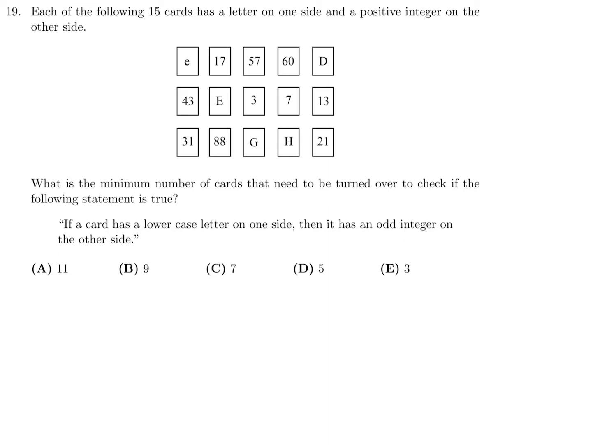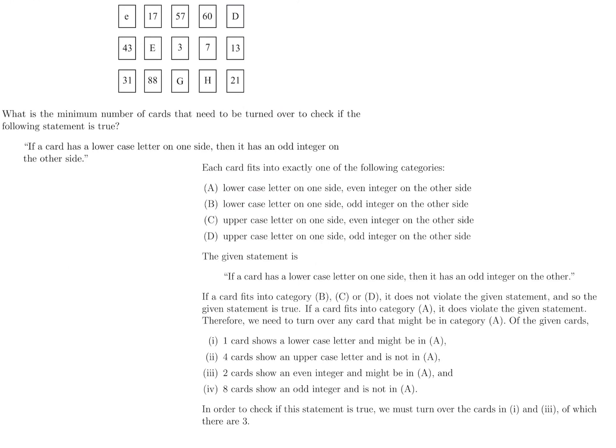Each of the following 15 cards has a letter on one side and a positive integer on the other side. What is the minimum number of cards that need to be turned over to check if the following statement is true? If a card has a lowercase letter on one side, then it has an odd integer on the other side. This question is a little tricky. We have a whole bunch of cards here, and every card is in one of four categories. It can be either lowercase or uppercase, and if it is lowercase, it can have on the other side either an even or odd. If it's uppercase, it can have on the other side either an even or odd.